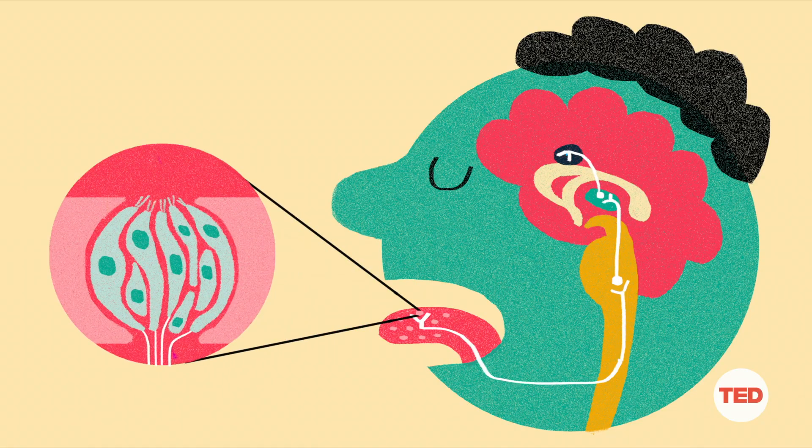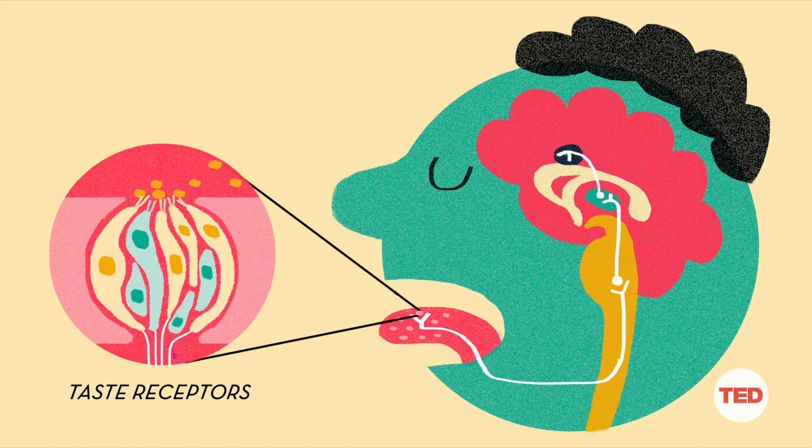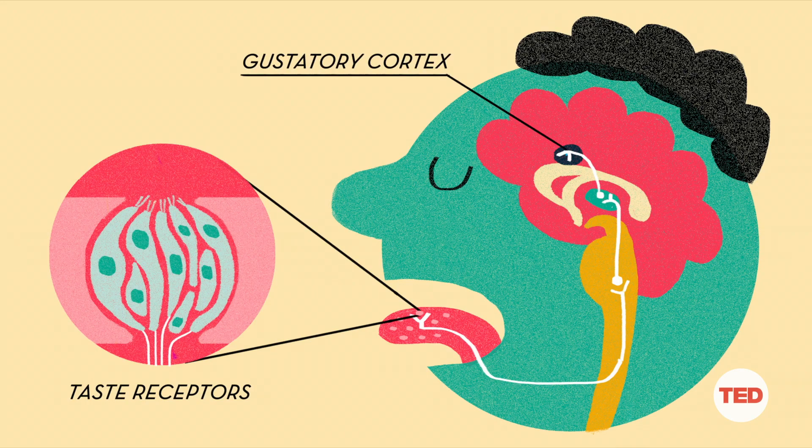Now quick background on how taste works. Our taste buds are made up of specialized neurons called taste receptors. Whenever we eat something that triggers a particular taste, those taste neurons will fire a signal to the brain. Now this allows our brain to know what's sweet and what's bitter.